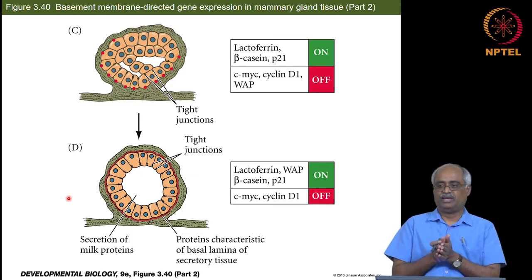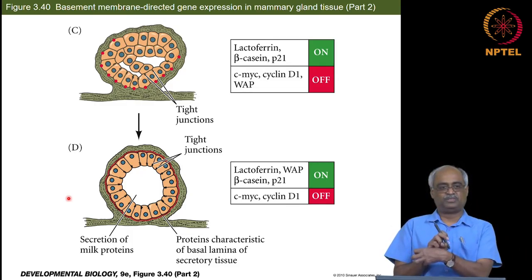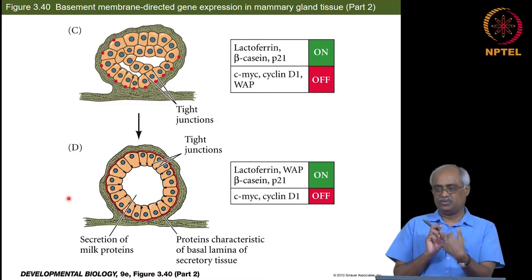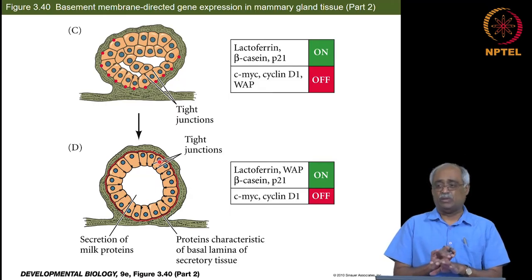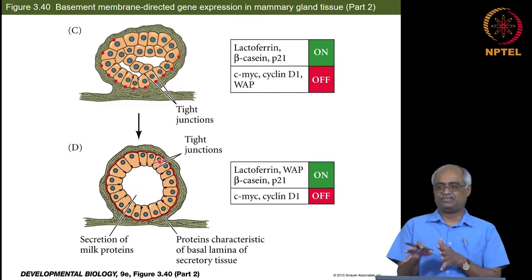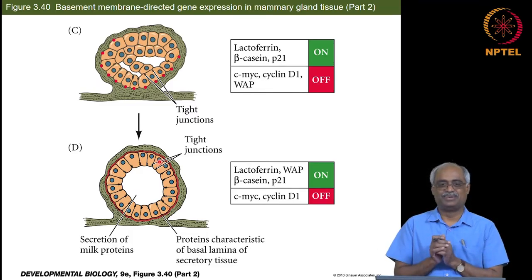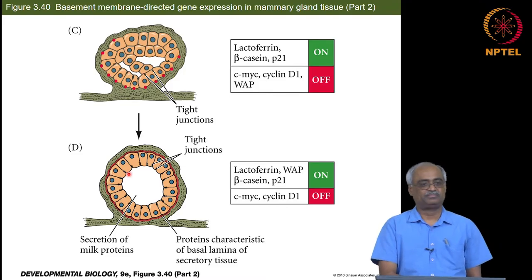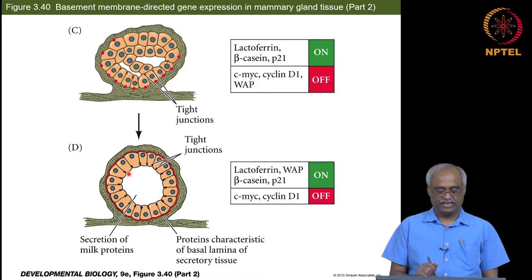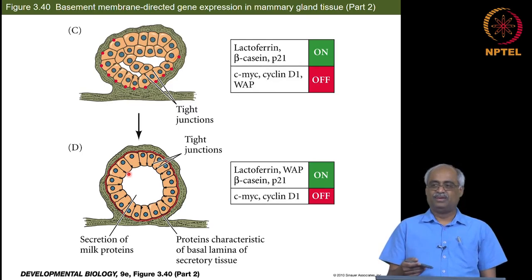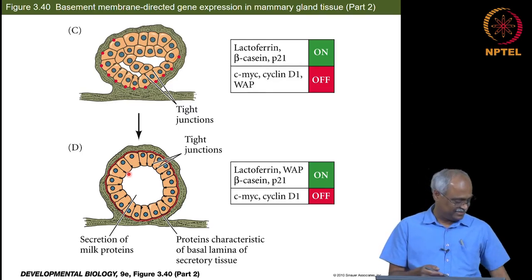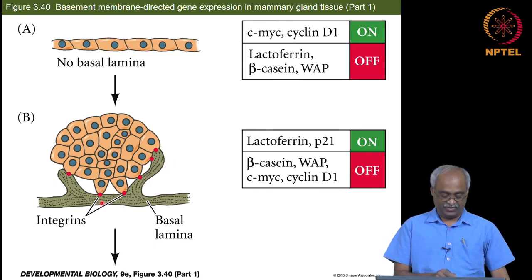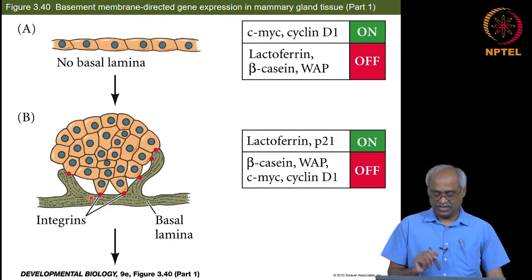Unlike desmosomes — which anchor a cell to an adjacent cell or to the basement membrane — or gap junctions — where things can freely move from one cytoplasm to another — tight junctions involve membrane fusion so there is no leakage. You now have a milk-secreting mammary gland tube. If you break down the integrin-ECM attachment, this differentiation will not happen, which is why ECM is critical.